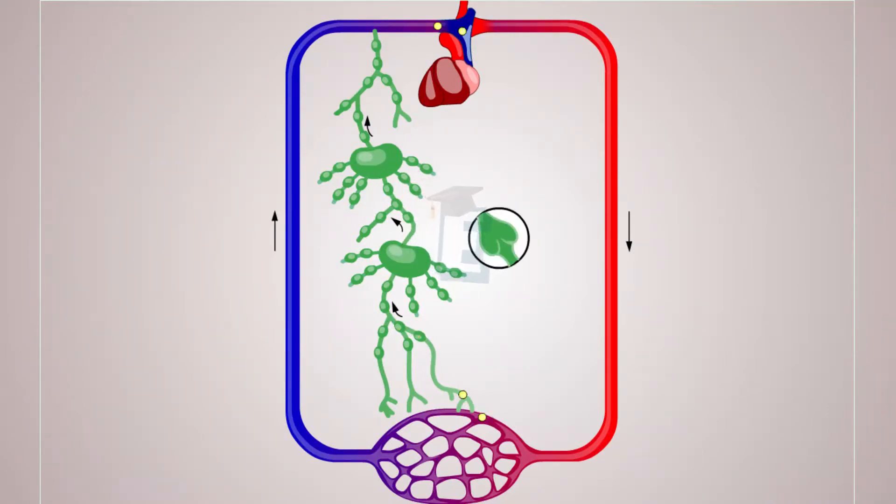Lymphatic vessels have valves that make lymph flow only in one direction. The lymphatic vessels can be found at the spaces between muscles.